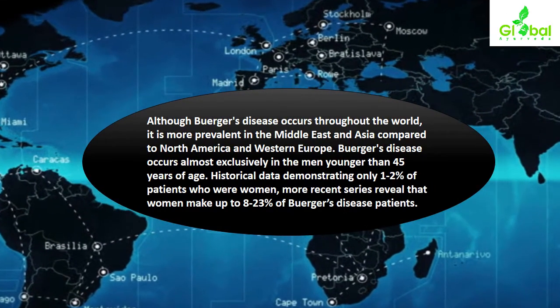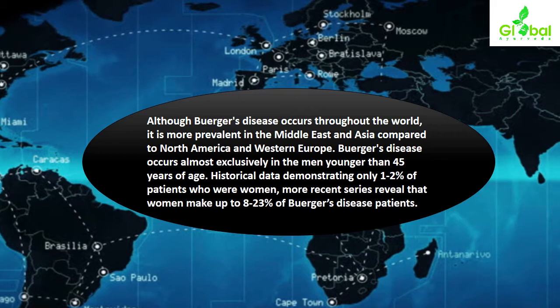Regarding epidemiology, although Buerger's disease occurs throughout the world, it is more prevalent in the Middle East and Asia compared to North America and Western Europe. Buerger's disease occurs almost exclusively in men younger than 45 years of age. Historical data demonstrated only 1–2% of patients were women, while more recent series revealed that women make up 8 to 23% of Buerger's disease patients.